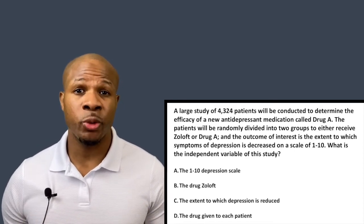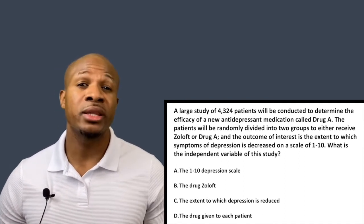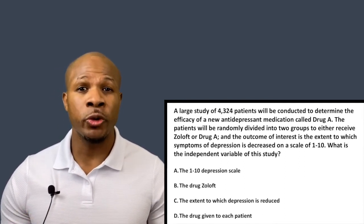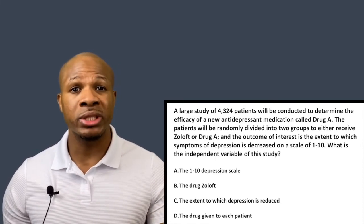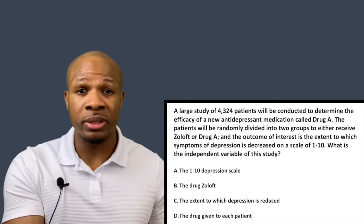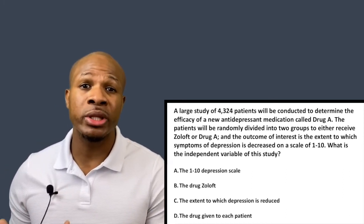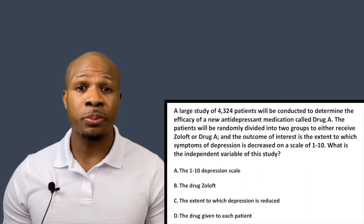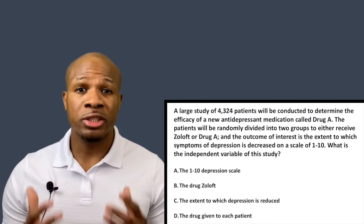We're testing Drug A versus the current standard of therapy, Zoloft, and we're asked to determine the independent variable. The independent variable is the input, and the input is determined by the person doing the experiment. We have a group of patients, we give them an input, wait a while, then look at the output. What we want to see is whether there's a pattern between the input and the output — and what we control is the input, which is the independent variable.